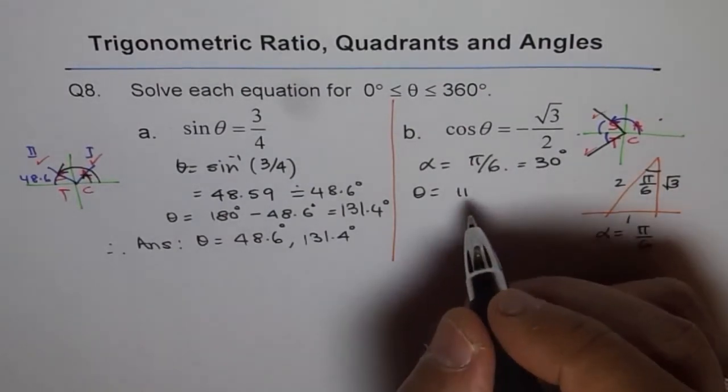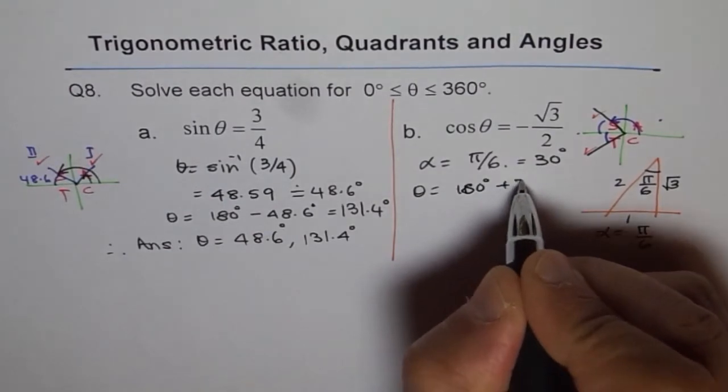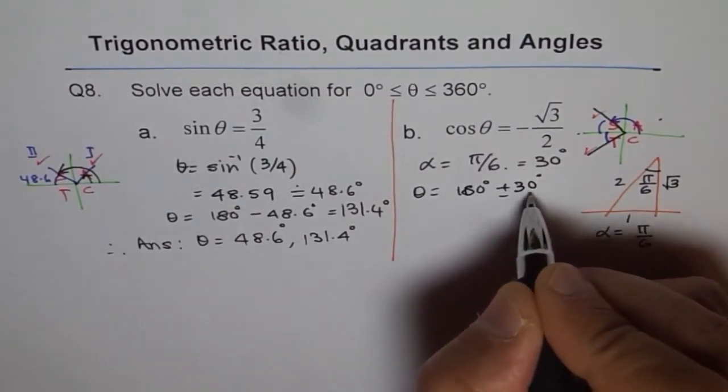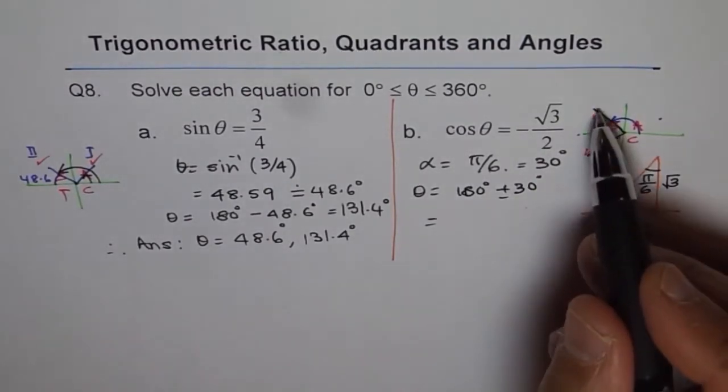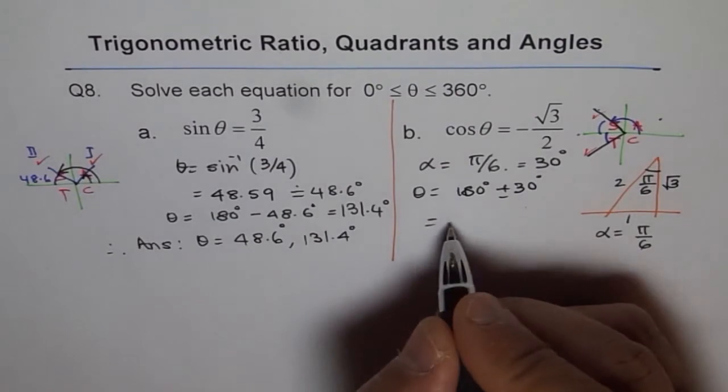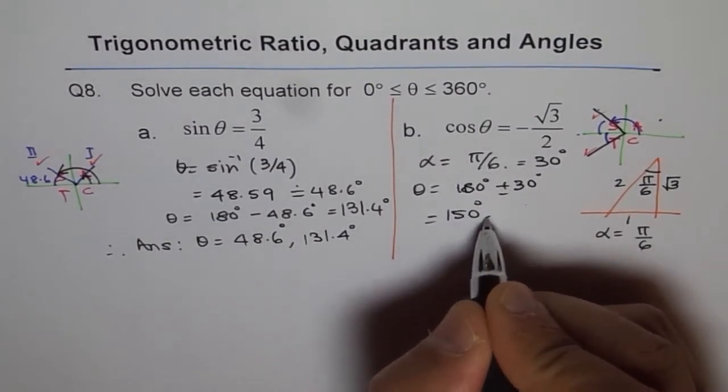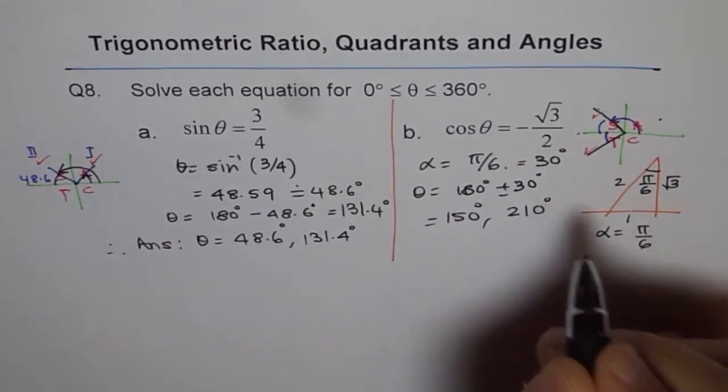So 30 degrees. And so the other angles are 180° + 30° and 180° - 30°. So we get two solutions. One for quadrant 2, the other one for quadrant 3. So if you do minus 30 degrees you get 150 degrees. And the other solution is 180 + 30 which is 210 degrees.